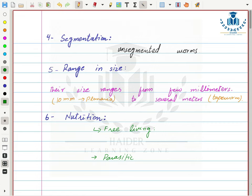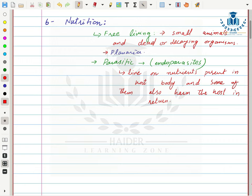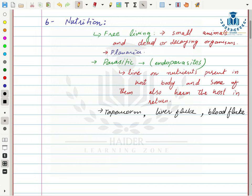In terms of nutrition, there are two kinds of worms in Phylum Platyhelminthes. Some are free-living — not parasitic — while others are parasitic. Most of them are endoparasites, meaning they live inside the body of the host. Free-living forms get their nutrition from small animals and dead or decaying organisms; planaria is an example. Parasitic forms — such as tapeworm, liver fluke, and blood fluke — live on nutrients from the host body and may harm the host.